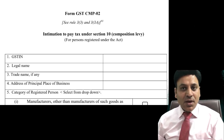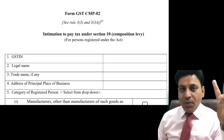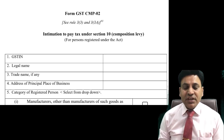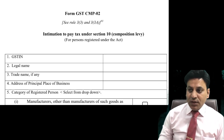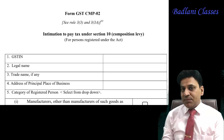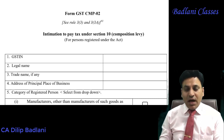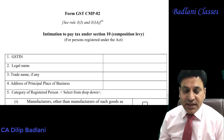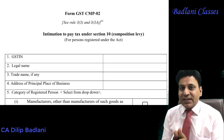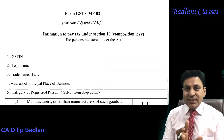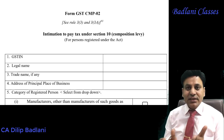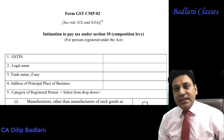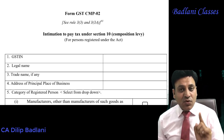Hello Friends! आज हम लोग composition scheme के form No.2 की बात करेंगे। इस form में हम लोग देखेंगे how to fill up the particular form. जैसा कि मैंने आपको पहले CMP-01 fill up करना बताया है, आज हम लोग CMP-02 को fill up करना सीखेंगे। Basically यह form उन लोगों के लिए है जो CGST, SGST act में registered हैं - this is not for those persons who are going to migrate from the old law to the new law. उनके लिए CMP-01 है।